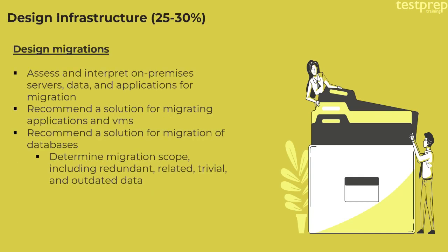Number two: Design Migrations, divided into four parts — assess and interpret on-premises servers, data, and applications for migration; recommend a solution for migrating applications and VMs; recommend a solution for migration of databases; determine migration scope including redundant, related, trivial, and outdated data.